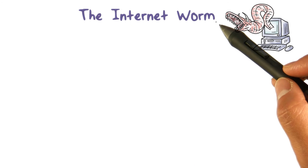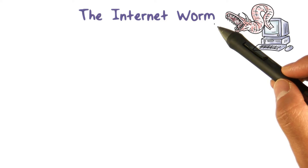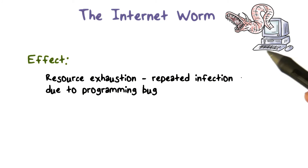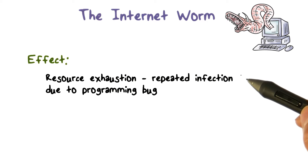According to its creator, the internet worm was meant as part of an experiment to measure the size of the internet — for example, by measuring how many computers are connected together. However, there was a programming error in the code. That is, the worm would infect a computer regardless of whether the computer had already been infected or not, one out of seven times.